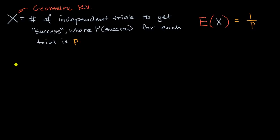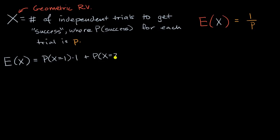The expected value of any random variable is just going to be the probability-weighted outcomes that you could have. So it is the probability that our random variable is equal to one times one, plus the probability that our random variable is equal to two times two, and so on. A geometric random variable can only take on values one, two, three, four, and so forth. It will not take on the value zero because you cannot have a success if you have not had a trial yet.